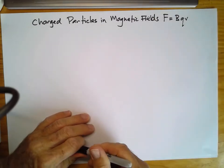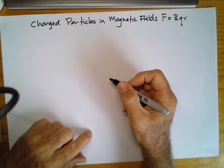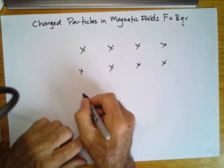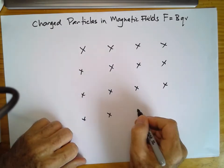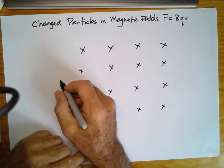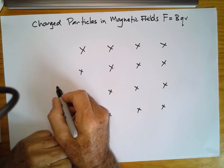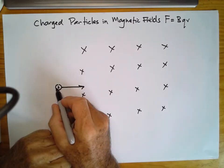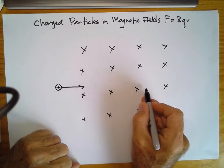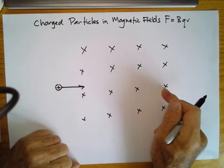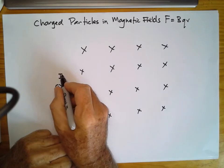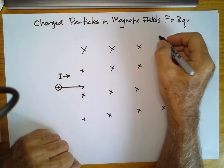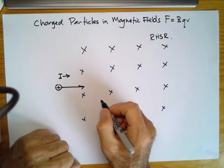When a charged particle moves through a magnetic field, it experiences a force. Here we have a magnetic field into the page, and a charged particle entering from the left. A positively charged particle moving to the right is the same as a conventional current moving to the right. So we can write that as a current in this direction. With a current in this direction and the magnetic field this way, we use the right-hand slap rule to find the direction of force on the particle.